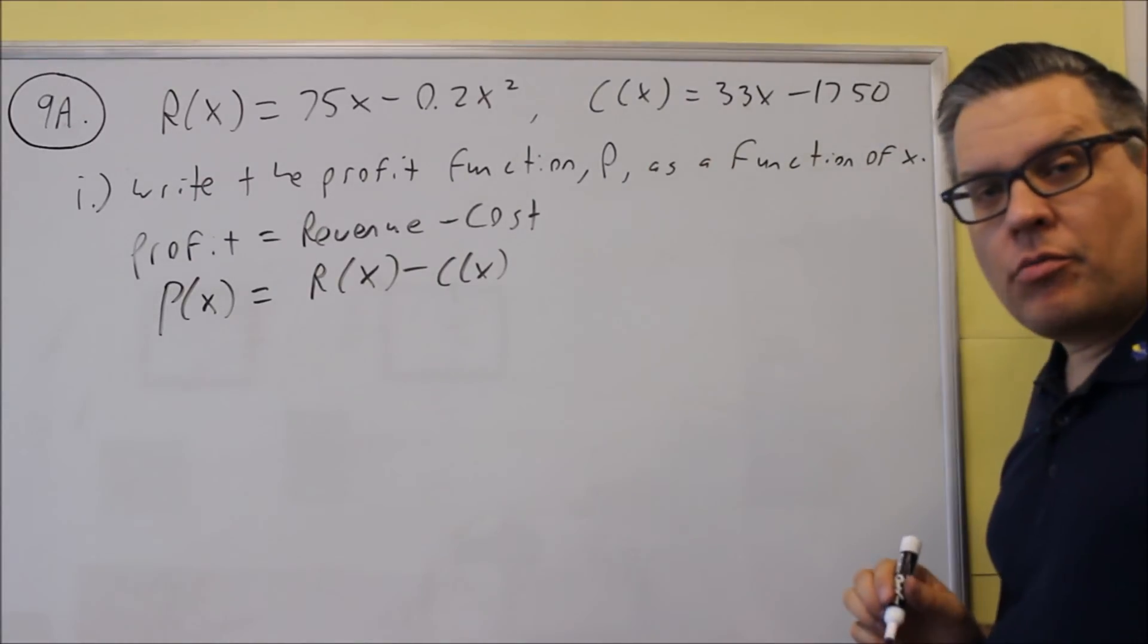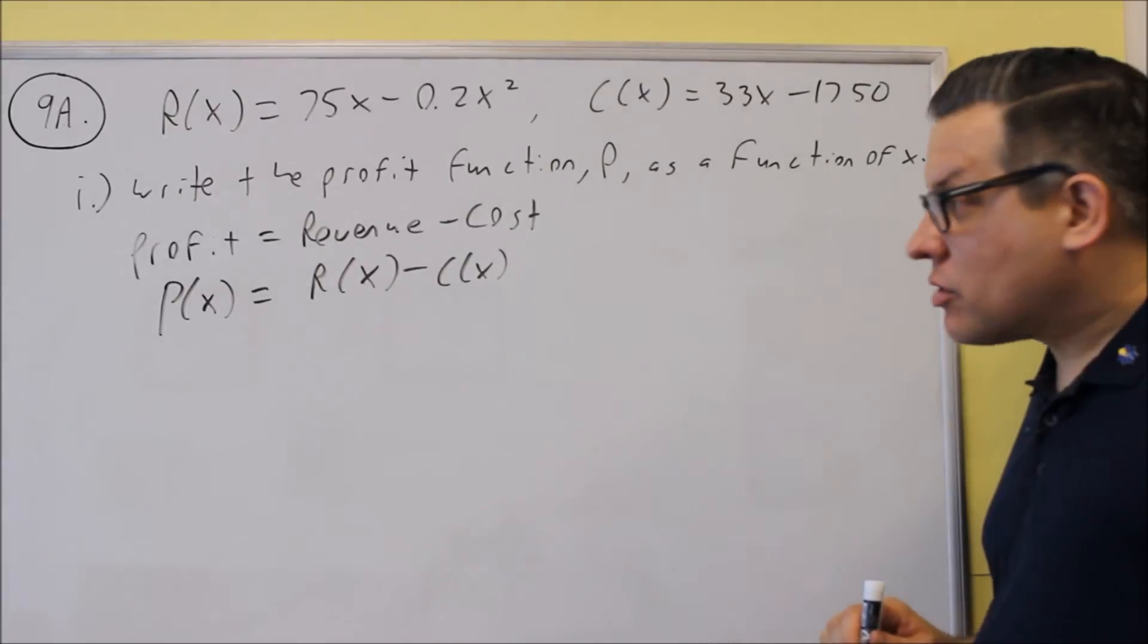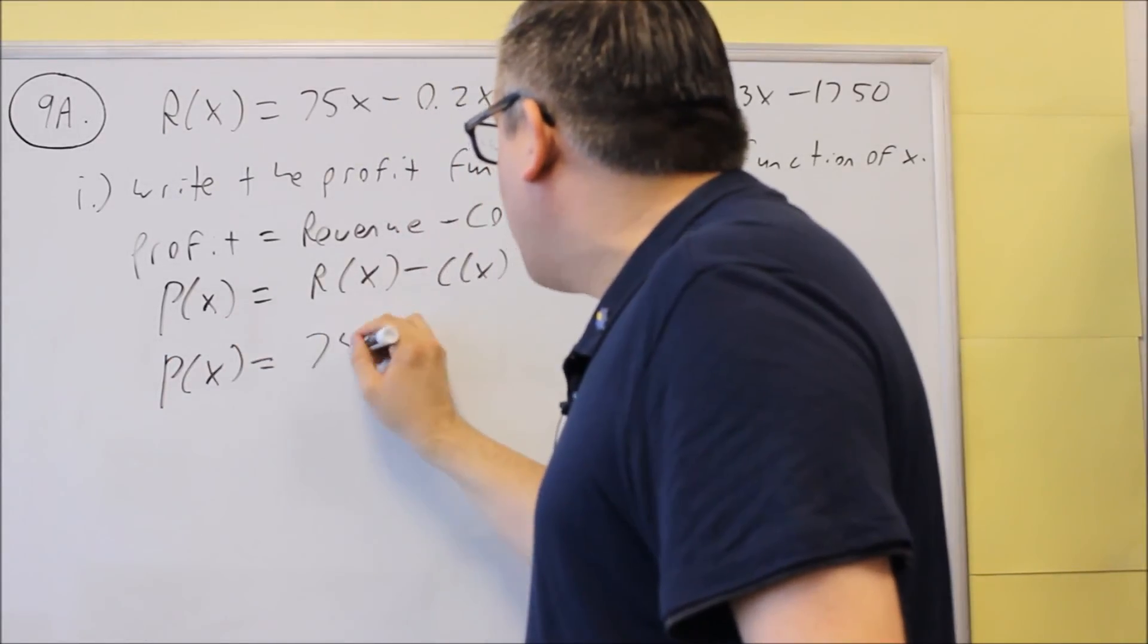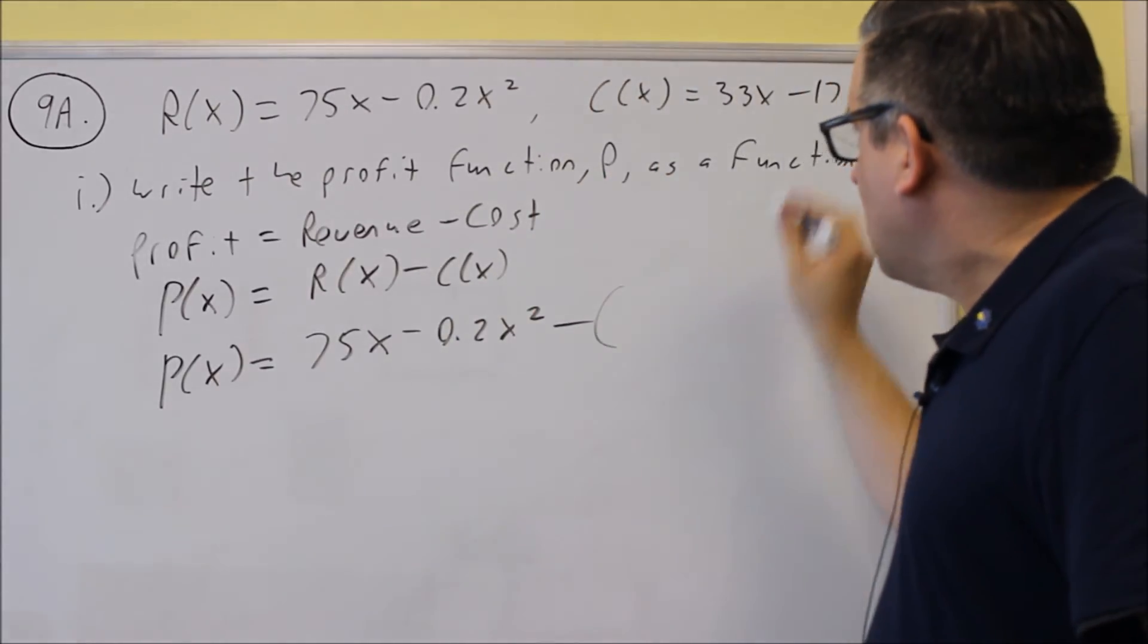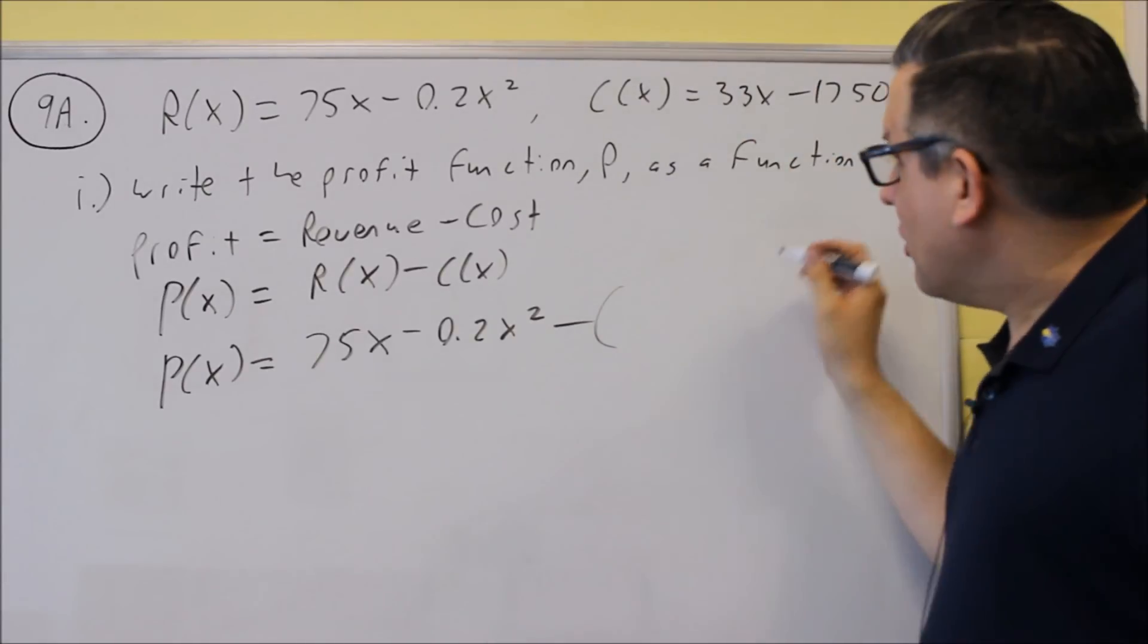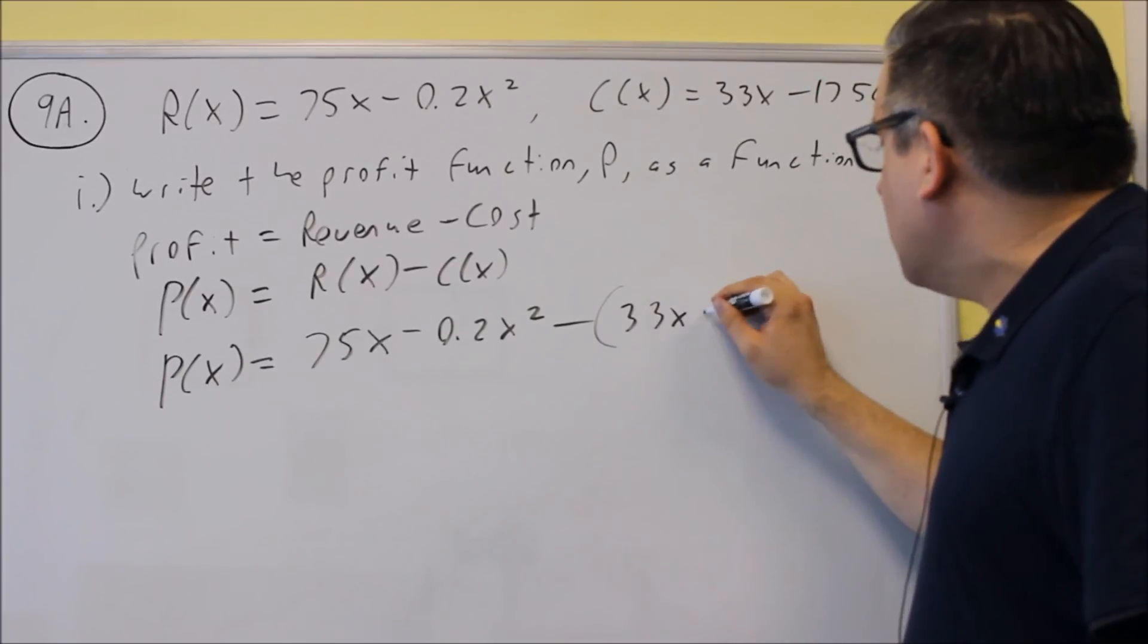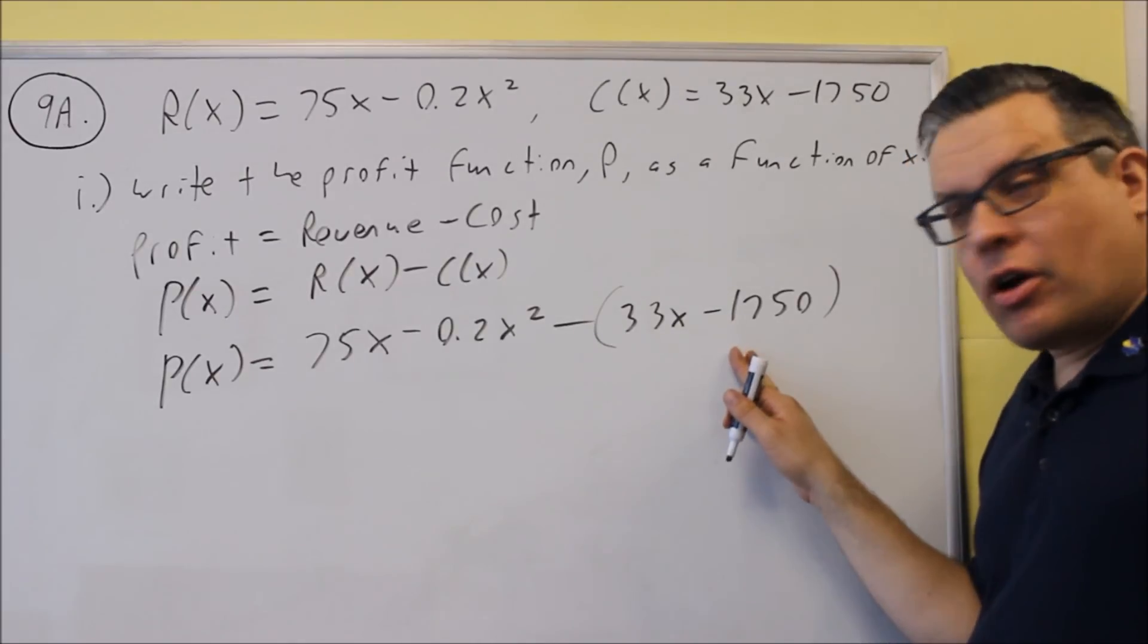That's what it would mean algebraically. Now I have both of these formulas given to me, so I can just go ahead and subtract those. For profit, I'm going to do revenue: 75x minus 0.2x² minus the cost. When you subtract that, make sure you put that in parentheses because we are subtracting the entire equation. So I'm subtracting the whole thing, and now I want to combine like terms together.